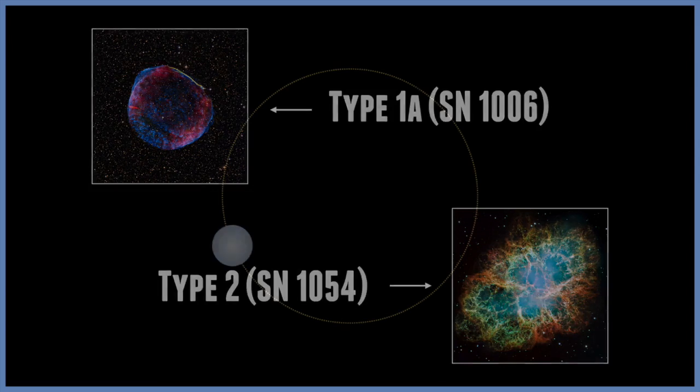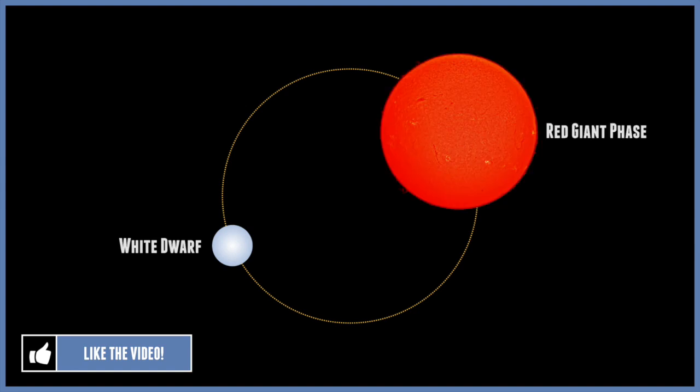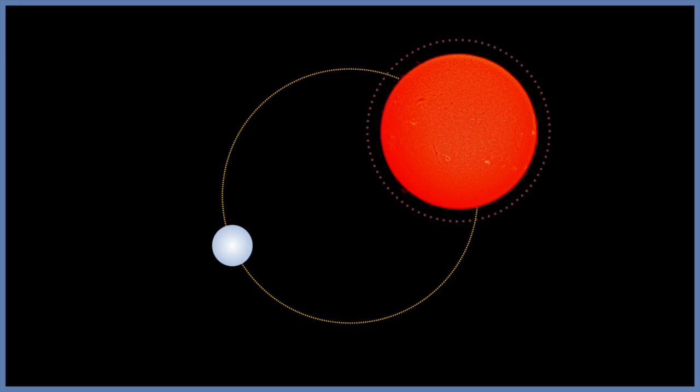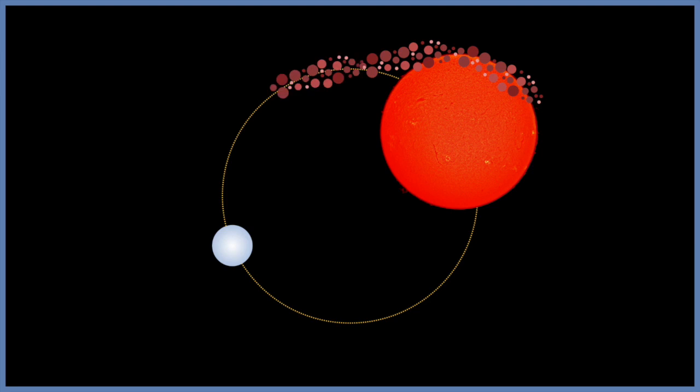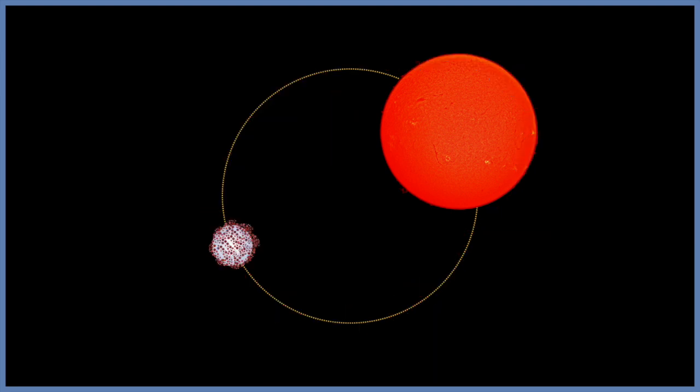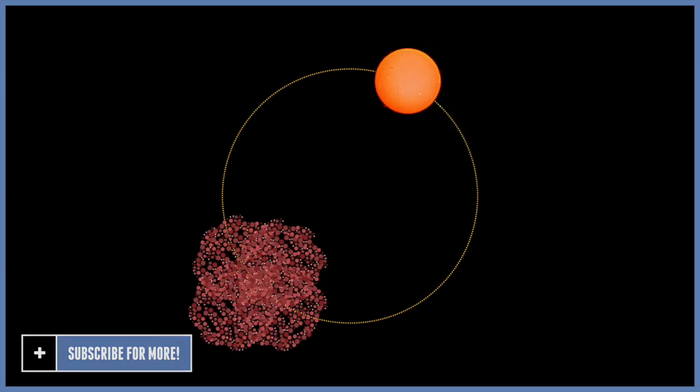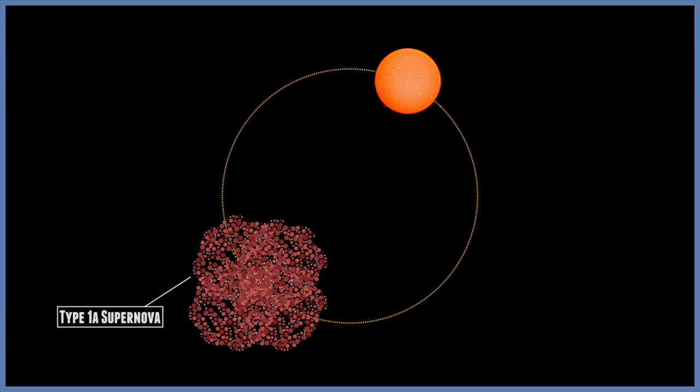The first method is caused by a white dwarf in a binary system. If the companion is very close to the white dwarf, when it enters the red giant stage, its outer layers can be pulled off by the white dwarf. If enough matter is transferred from one star to the other, the mass of the white dwarf will continue to increase until it reaches a critical mass. At this point the white dwarf is too massive to be stable, and therefore it explodes in a violent supernova. This is what's known as a type 1a supernova.